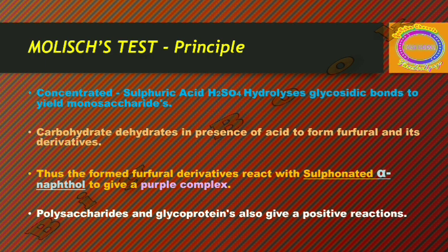The formed furfural derivatives react with sulfonated alpha-naphthol to give a purple complex. The derivative formed from the reaction of sulfuric acid with the monosaccharide or carbohydrate reacts with alpha-naphthol to give a purple complex, and the formation of this purple complex indicates the presence of a carbohydrate compound in the sample.